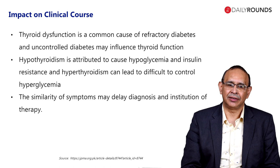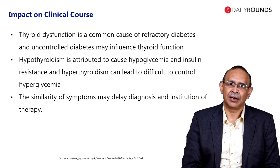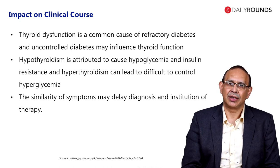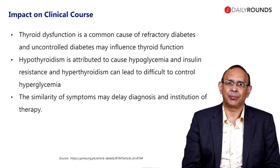As we go on in the natural history of thyroid disease, we find that thyroid dysfunction can be a common cause of refractory diabetes. Graves' disease uncontrolled will lead to hyperglycemia. Hashimoto's thyroiditis uncontrolled — that is, hypothyroid — will lead to hypoglycemia. A patient with a TSH of 100 will have less insulin requirement. As you treat the patient and the TSH improves, you will find that glucose levels will rise and insulin requirements will go up.